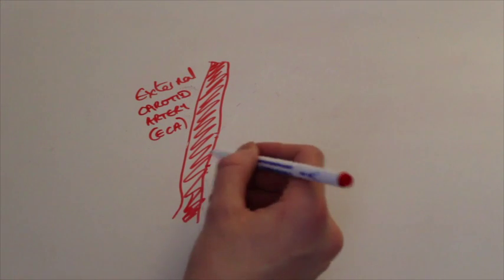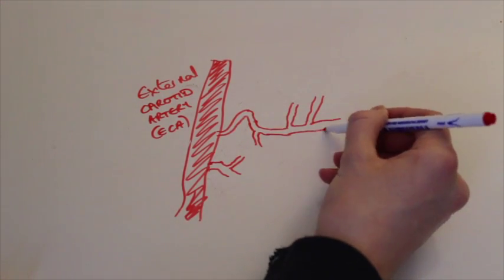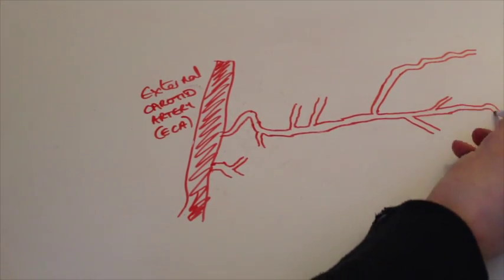So today we're going to talk about the arteries of the tongue. The arteries of the tongue are quite easy to understand. I'm going to draw out quickly first and then we can label them together to understand where they go.